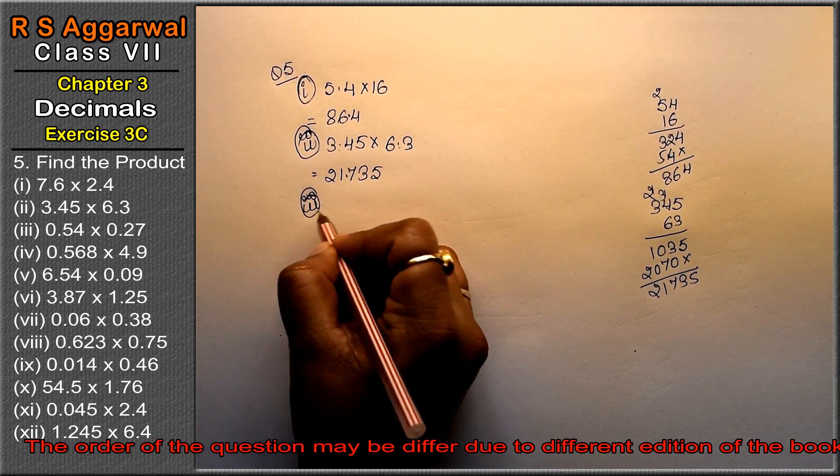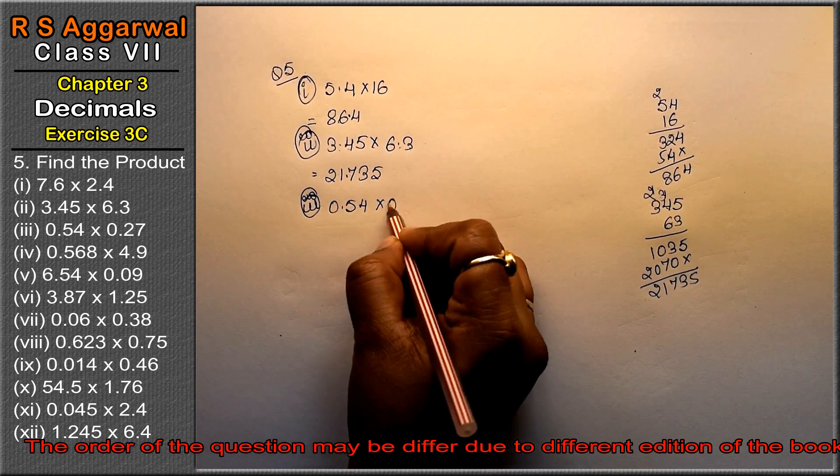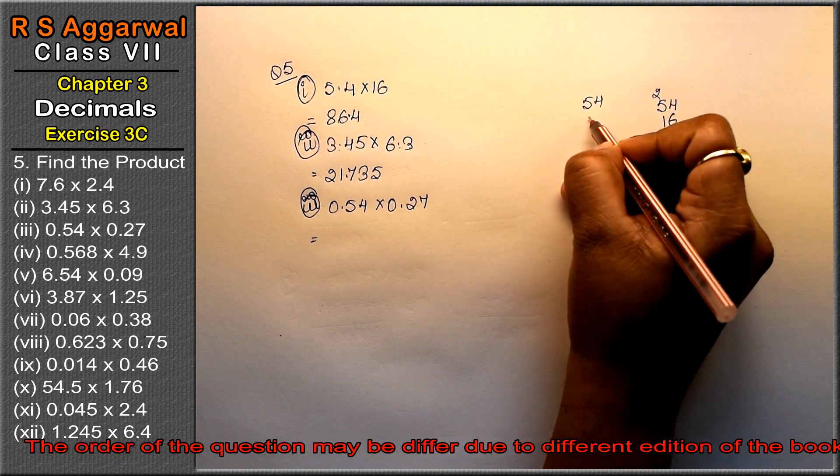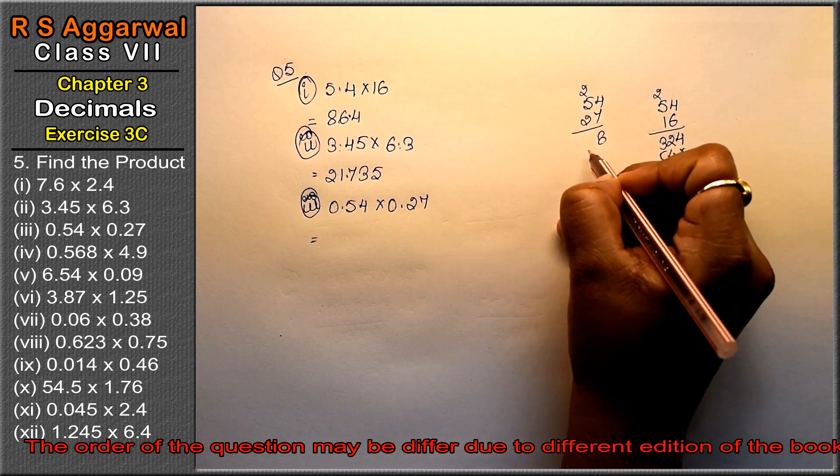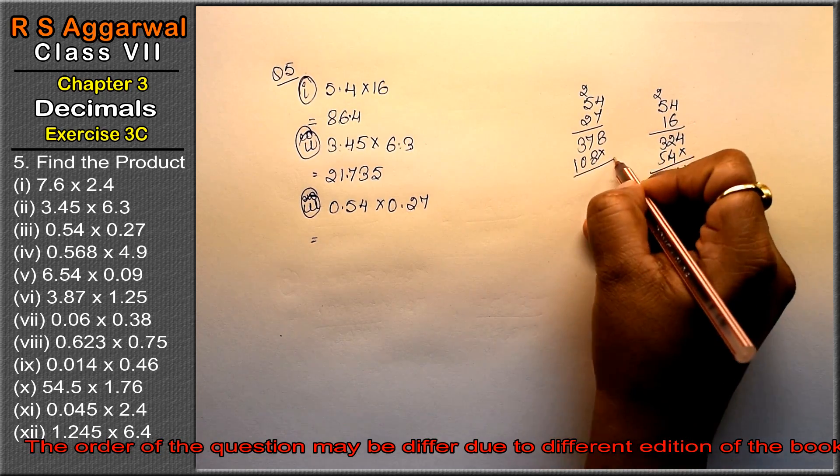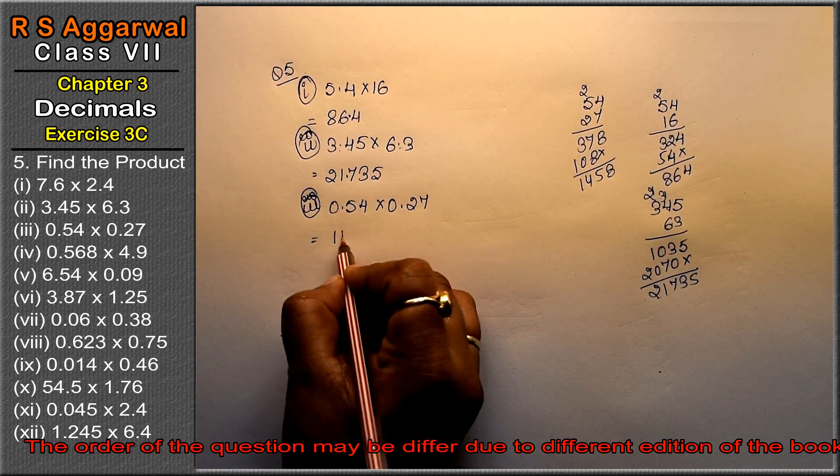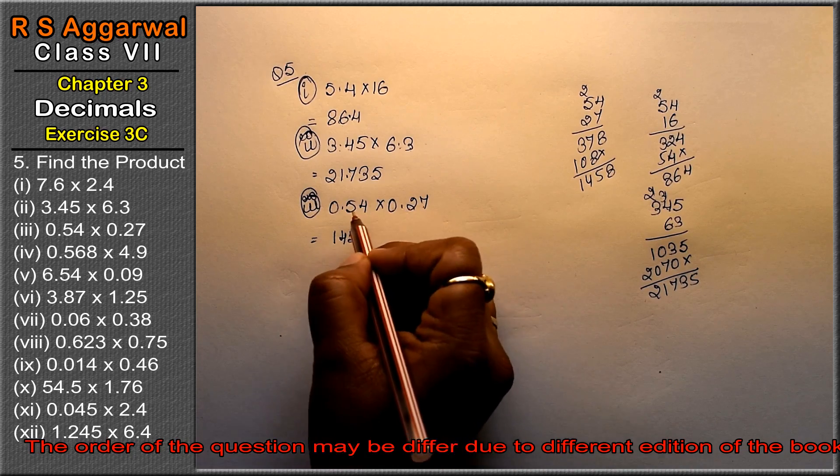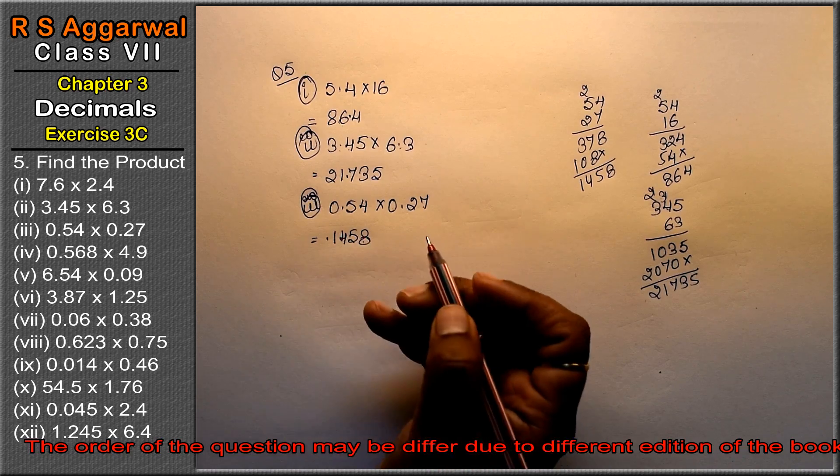Let's do third part: 0.54 into 0.27. Multiply 54 and 27. 7 times 4 is 28, carry 2. 7 times 5 is 35, 36, 37. Then 2 times 4 is 8, 2 times 5 is 10. Add to get 1458. Point kitne ke baad? 2 plus 2 is 4 decimal places, so 1, 2, 3, 4 ke baad point. The answer is 0.1458.